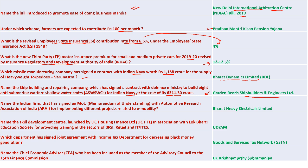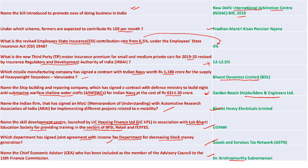Garden Reach Shipbuilders and Engineers signed a contract with the Defense Ministry worth 6,311.30 crore to build eight anti-submarine warfare shallow watercraft. Bharat Heavy Electricals Limited (BHEL) signed an MOU with the Automotive Research Association of India for implementing e-mobility projects. Udhyam is the skill development center launched by LIC Housing Finance in association with Log Bharati Education Society for training in BFSI, retail, and ITI sectors. GSTN joined agreements with the Income Tax Department for reducing black money generation. Dr. Krishnamoorthi Subramanyam was appointed as the Chief Economic Advisor.